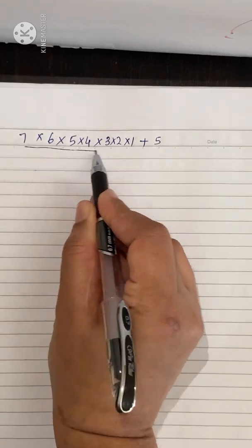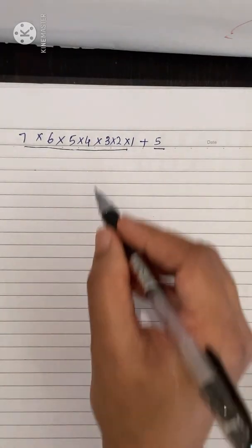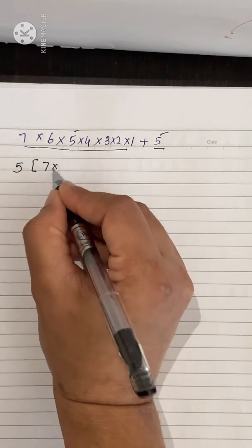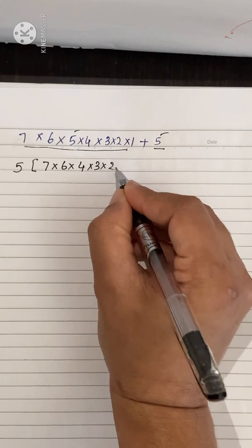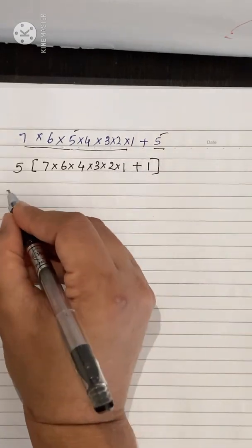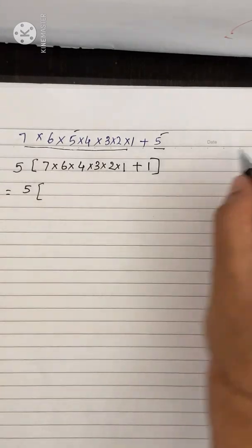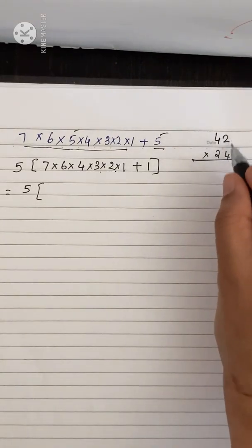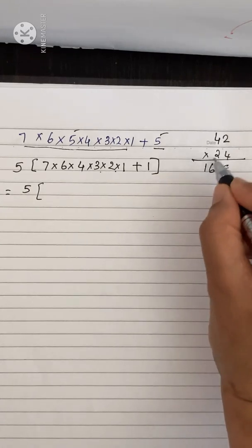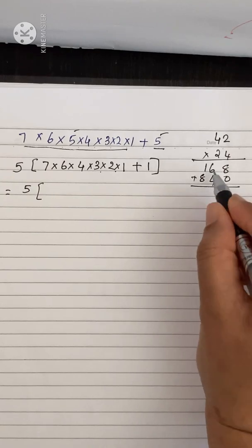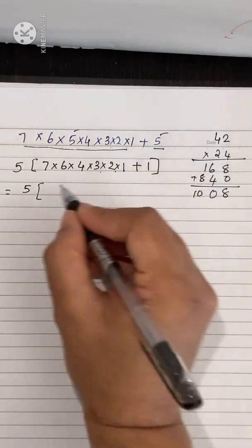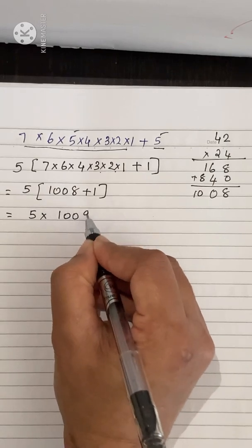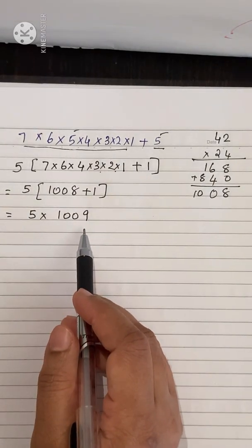Now for the second expression, take one term as 7 into 6 into 5 into 4 into 3 into 2 into 1 and the second term as 5. Since 5 is common, take 5 outside: 5 into (7 into 6 into 4 into 3 into 2 into 1 plus 1). Calculating: 7×6 = 42, 42×4 = 168... which gives 5 into 1009.